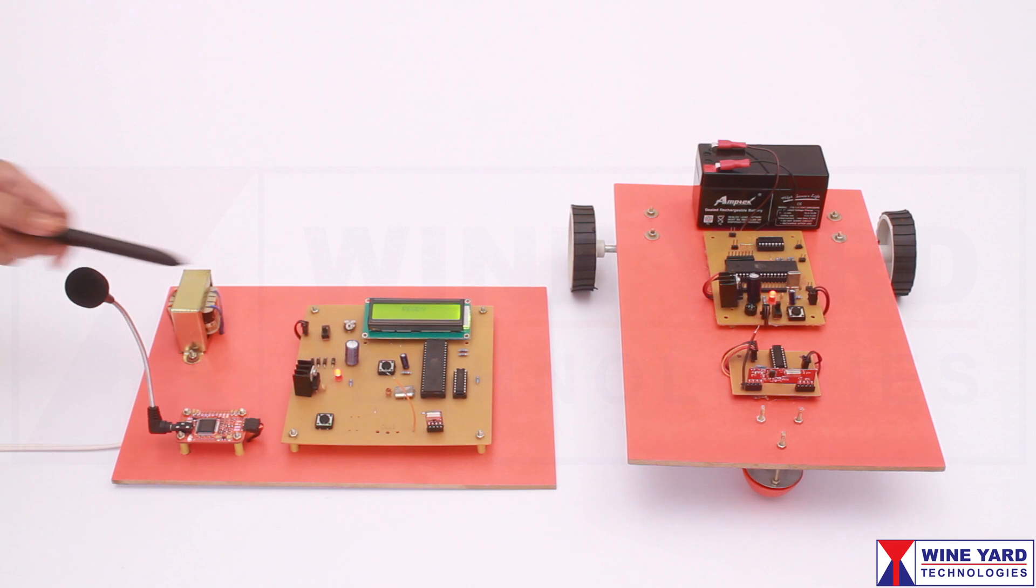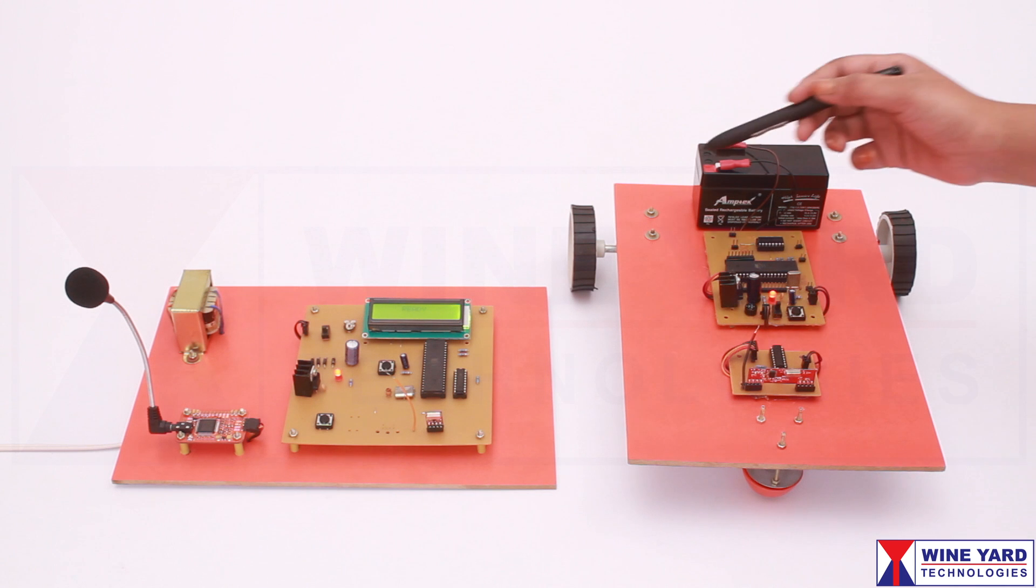This LCD displays the voice command and robot status. This robot is powered by a 12 volt lead acid battery.